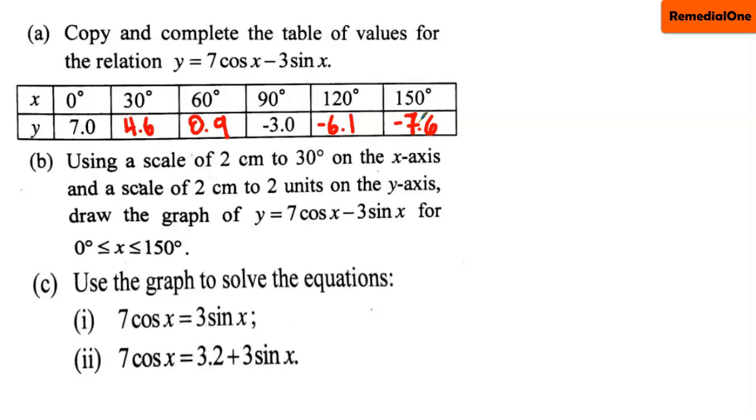We move on to the b. It said use a scale of 2 centimeters to 30 degrees on the x-axis and 2 centimeters to 2 units on the y-axis. We are going to go to the graph and make it happen. We have been given the domain, we have 0 to 150. The y-axis, they want you to figure it out. They didn't give you the range, so you have to figure it out. You have the table before you, you have already completed it. I have just put it here so that I can make a reference to it quick.